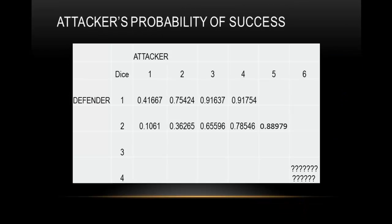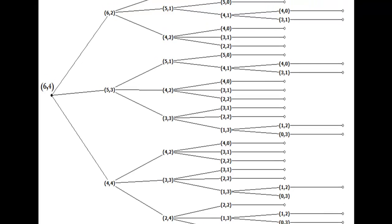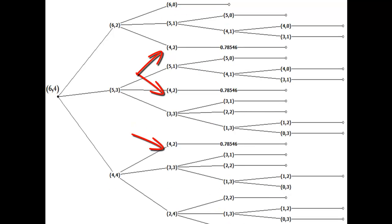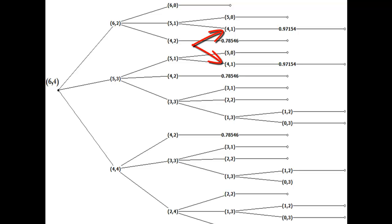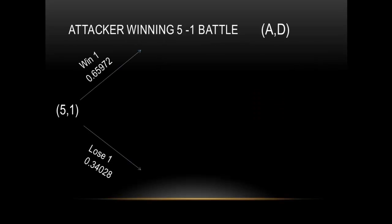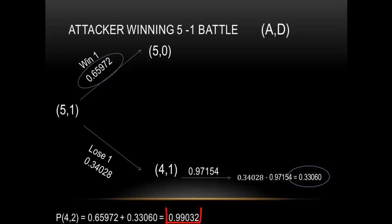I'm going to put all of those in the table — we did the 4 on 1, the 4 on 2, and the 5 on 2. I also have that 5 on 1 spot; let me do that quickly. For the 4 on 1 and 4 on 2, I can now replace those in the tree diagram, making it less messy — I was able to replace three branches. For the 5 on 1: you can win once or lose once. When you win, the defender has no more dice and you've won the battle. The 4 on 1 down here — we already know that probability. Multiply through those branches, add up all probabilities that lead to success, and there's the probability of a 5 on 1.